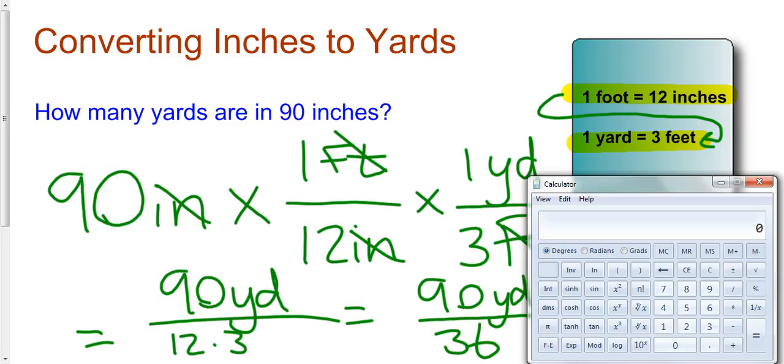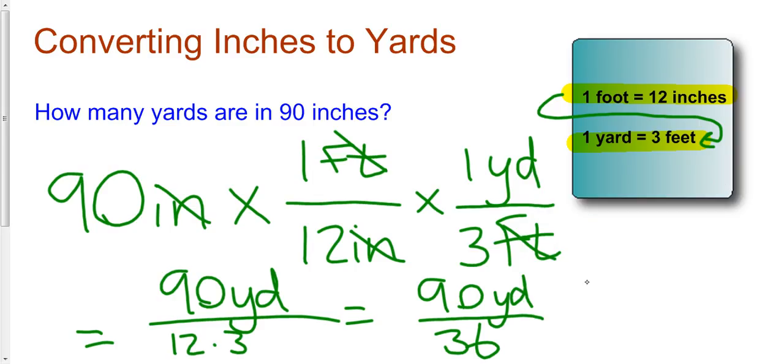So what does that give us? Let's pull out our calculator. We say 90 divided by 36, about 2.5. So here we have 2.5 yards.